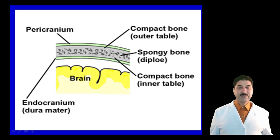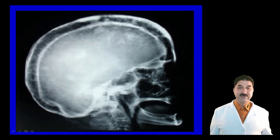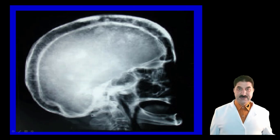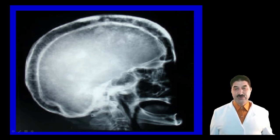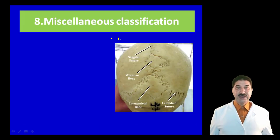If you take a section of the parietal bone, you will find two tables — inner and outer — of compact bone, separated by spongy bone called diploe. The veins present in the diploe are called diploic veins. On an X-ray of the skull, you can see the outer and inner tables of the bone separated by a radiolucent area representing the diploe, and the veins within are called the diploic veins.